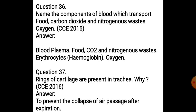Name the components of blood which transport food, carbon dioxide, and nitrogenous waste. The answer is blood plasma — food, carbon dioxide, and nitrogenous waste are transported by blood plasma. And erythrocytes — that is hemoglobin — transport oxygen, because hemoglobin combines with oxygen to form oxyhemoglobin. Next: Rings of cartilage are present in the trachea — why? This is the same answer as before, just a differently worded question.